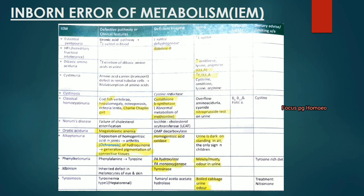Inborn errors of metabolism (IEM): exam questions may give the disease name and ask the deficient enzyme, give the clinical picture and ask for diagnosis, or give the clinical picture plus enzyme and ask you to choose the right diagnosis. Focus on three parts: the inborn error name, the clinical features, and the deficient enzyme. Urine findings may also be part of the clinical picture.